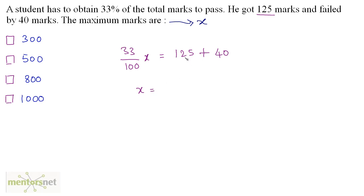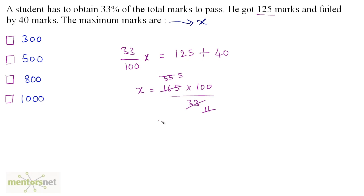Solving for x: x equals 165 times 100 divided by 33. Since 3 times 11 is 33 and 3 times 55 is 165, we get 11 times 5 equals 55, so x equals 5 times 100 equals 500. Therefore the maximum marks are 500.